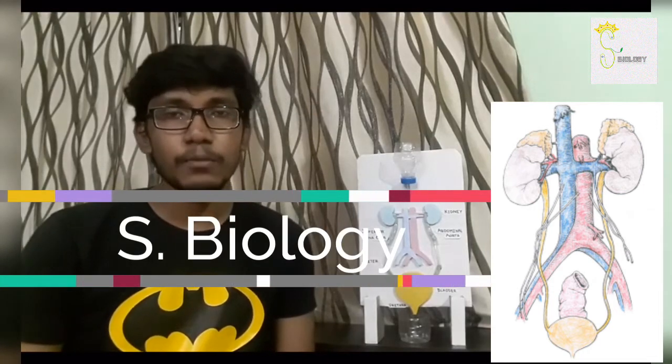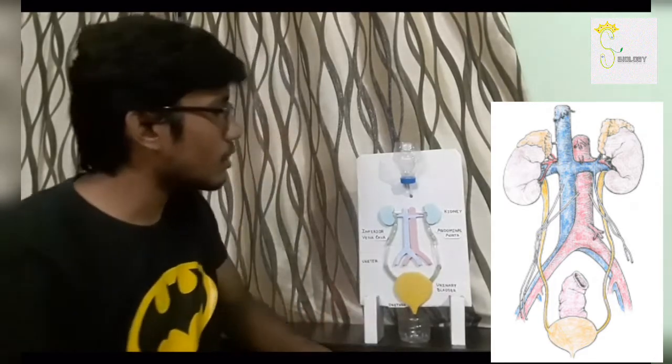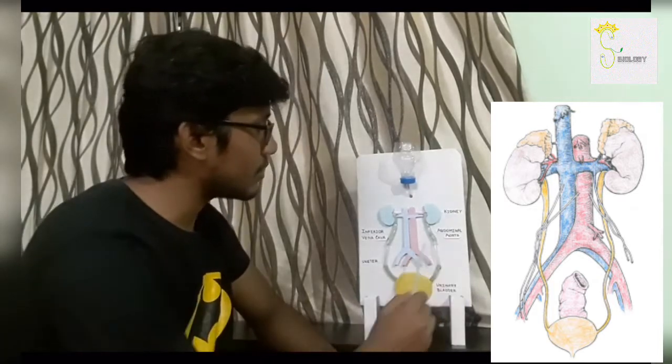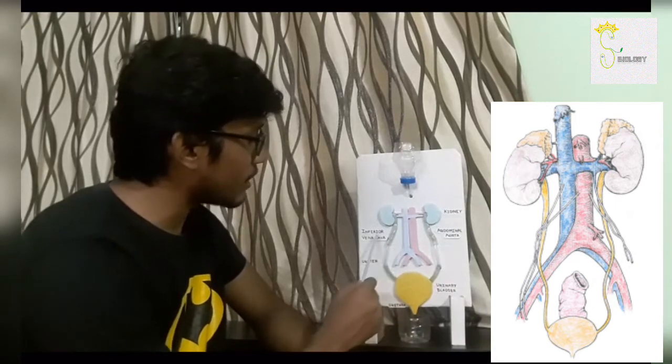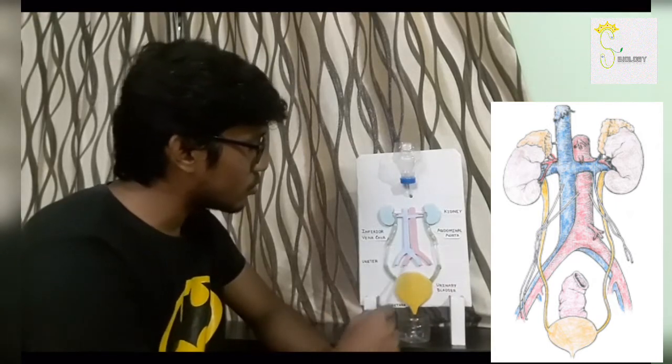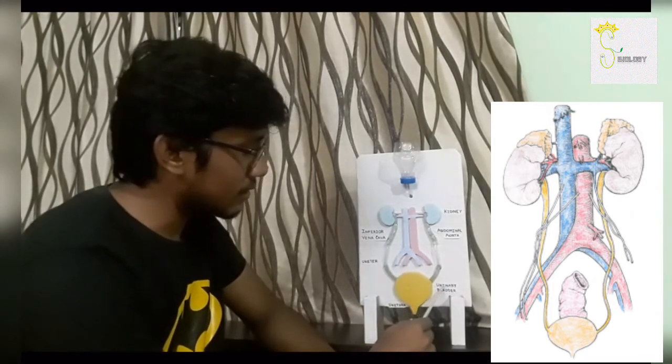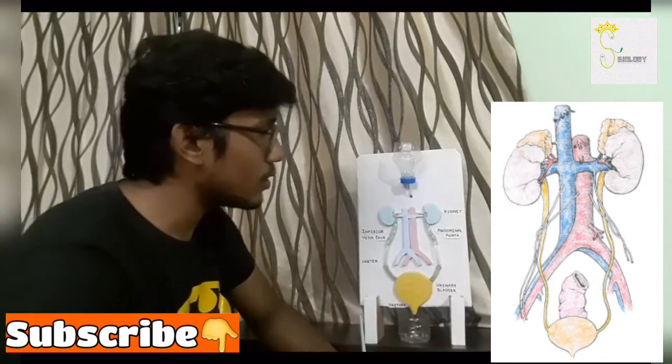Welcome back friend. Today I am talking about kidney mechanism of urination. This is a basic model of kidney. This is abdominal aorta, this is inferior vena cava, these two are ureters, this satellite structure is urinary bladder and this portion is urethra.